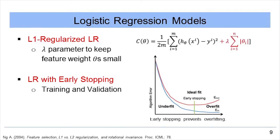Both logistic regression models made their predictions by fitting a logistic curve to the feature dataset while attempting to minimize a loss function. The L1 regularized model incorporates an additional lambda parameter that keeps the feature weight small and prevents overfitting. The early stopping model further splits the training data into a training and validation set, stopping training when the model begins to overfit, signaled by an increase in error on the validation set.